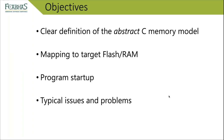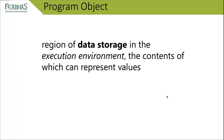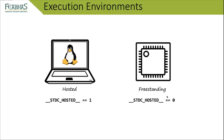In programming terms we often use the term 'variable', but C doesn't use that term in the standard. It talks about a 'program object', defined as a region of data storage in the execution environment whose contents can represent values. This is our runtime data. During the talk I may sometimes say variables and sometimes say objects.